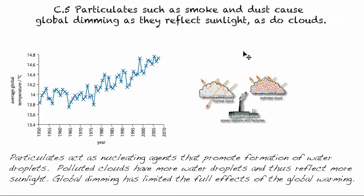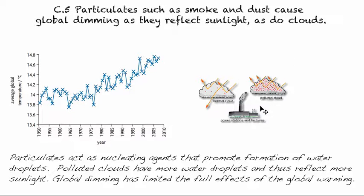So you can see this actually helps limit some of the potential of global warming from greenhouse gases, because global dimming is reflecting out some energy that might otherwise be absorbed if we had normal unpolluted clouds.